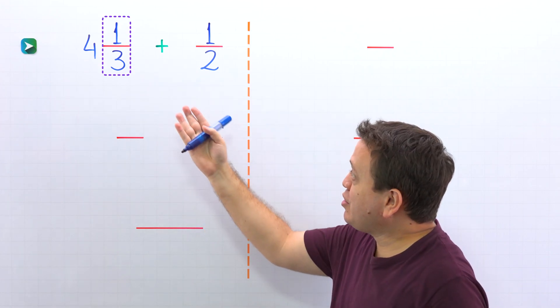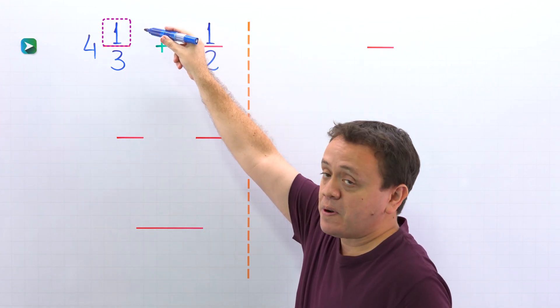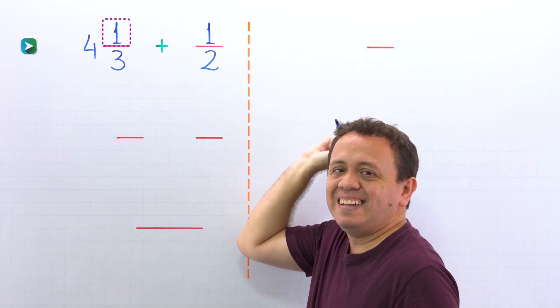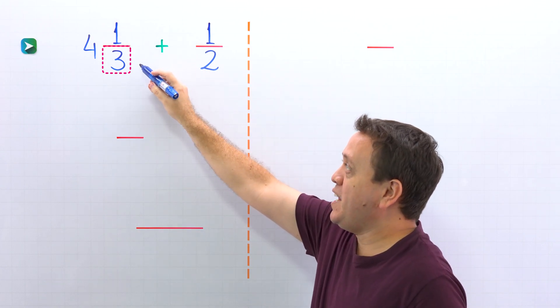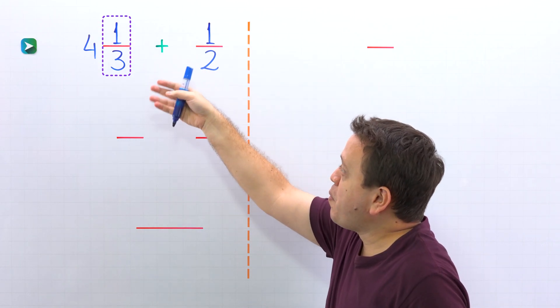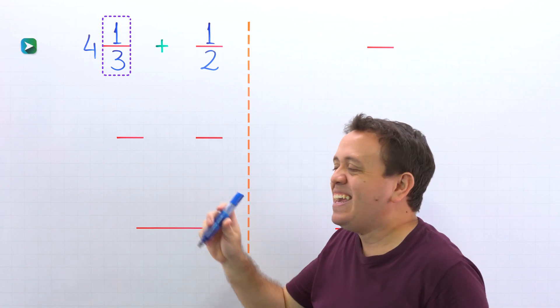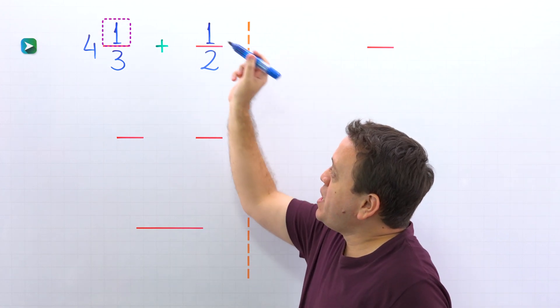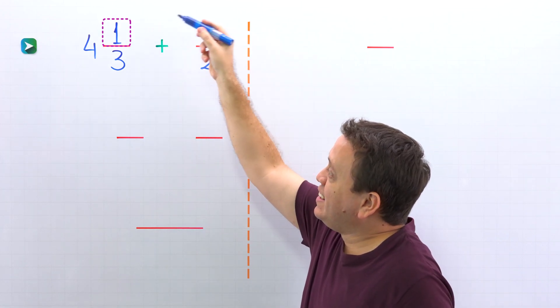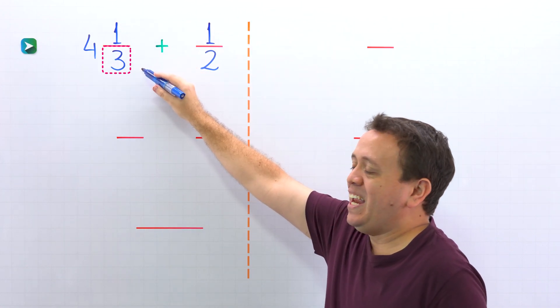Also, a proper fraction is a fraction where the numerator, the top number, is less than the denominator, the bottom number. For example, 1 third is a proper fraction, given that the numerator 1 is less than the denominator 3.